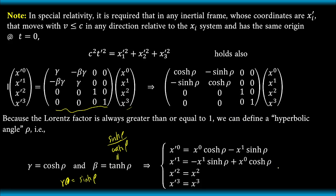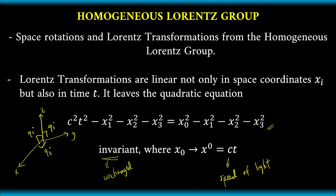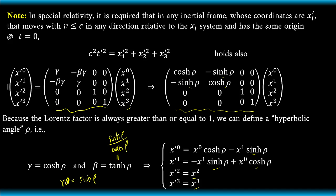If we rewrite this in matrix form, we have cosh(ρ) and negative sinh(ρ) in the first row, negative sinh(ρ) and cosh(ρ) in the second row, with ones along the diagonal for x² and x³, and zeros elsewhere. This matrix is multiplied by the unchanged coordinate vector x⁰, x¹, x², x³. That is the homogeneous Lorentz transformation. We will be extending these discussions when we tackle the Minkowski space, which deals with four-vectors or four-dimensional space-time coordinates. Thank you so much.